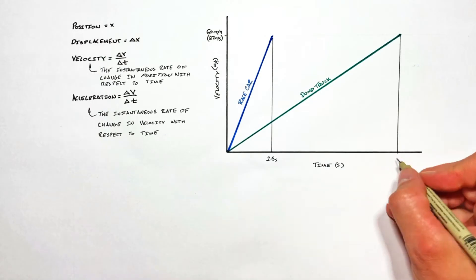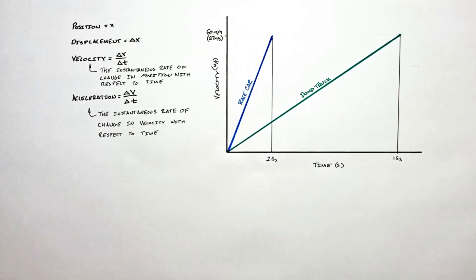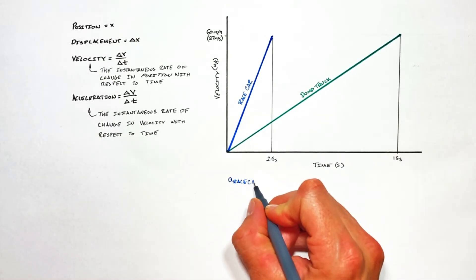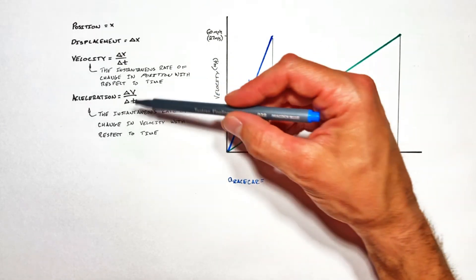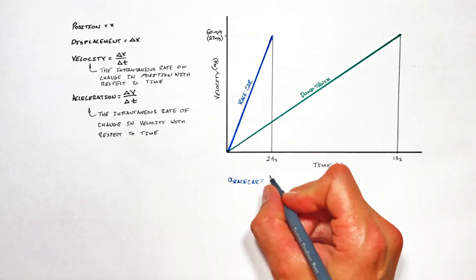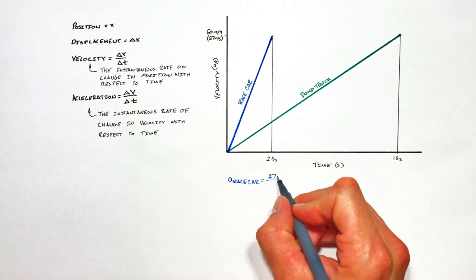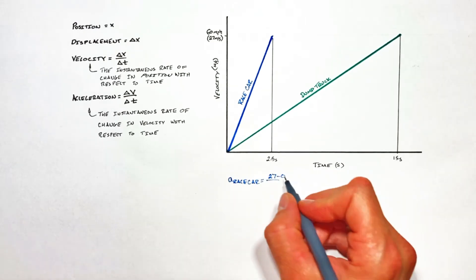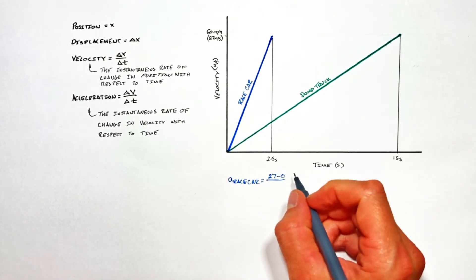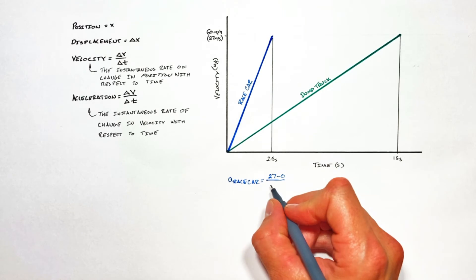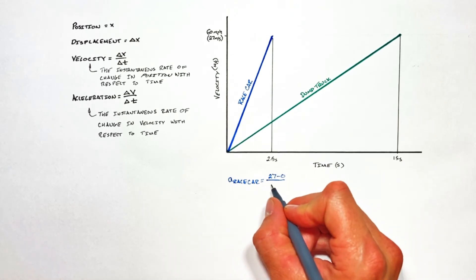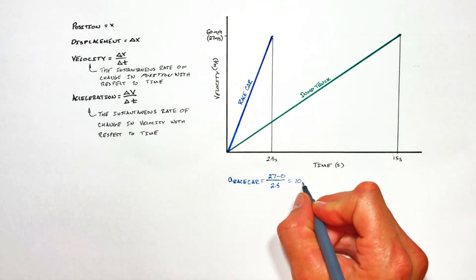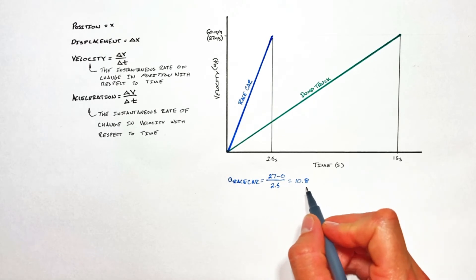Our dump truck is going to take 15 seconds. The acceleration of the race car is given by the change in velocity—that's 27 meters per second minus 0, the initial velocity—divided by the total change in time, that's 2.5 seconds, giving an acceleration of 10.8.